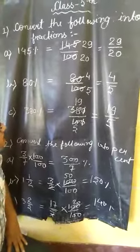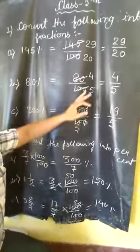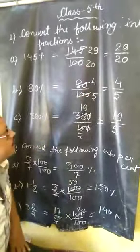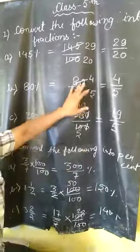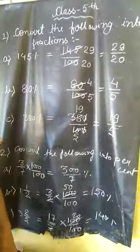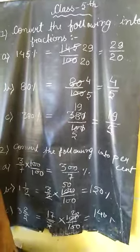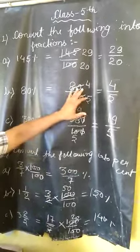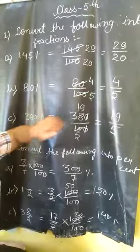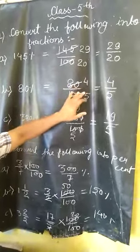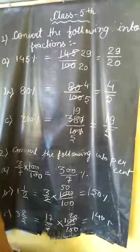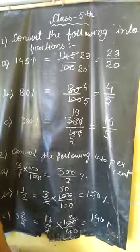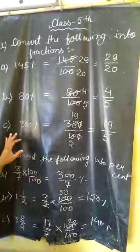Question number B: 80%. We can write it as 80 upon 100. After writing 80 upon 100, we can find the GCF of both numbers. 20 will be the GCF of 80 and 100. So we divide both sides by 20. When divided by 20, we get 4, and when divided by 20, we get 5. So 4 upon 5 is our simplest form of 80%.